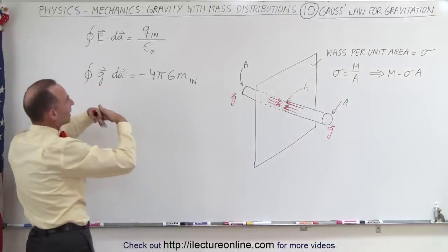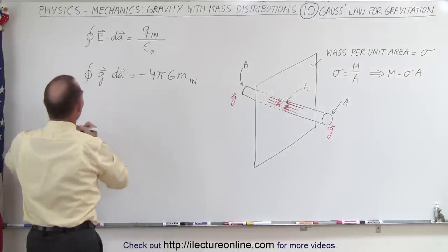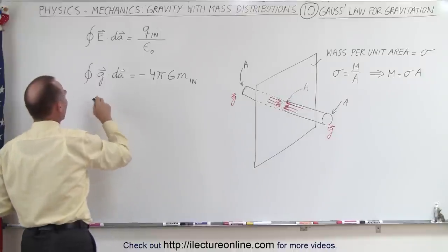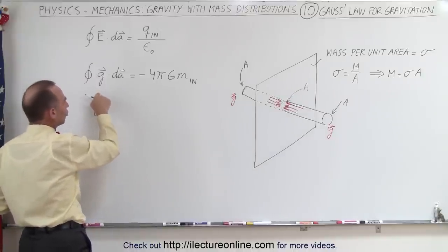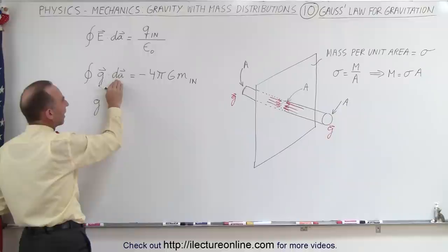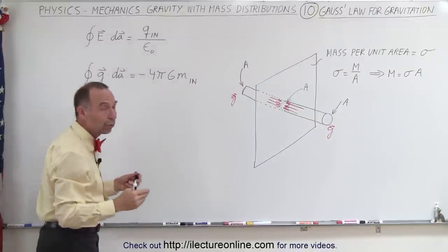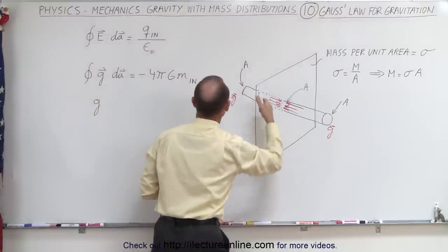But since it's 180 degrees, we can simply write this as the strength of the gravitational field g multiplied by the area through which the field goes through. That would be the sum of these two areas.